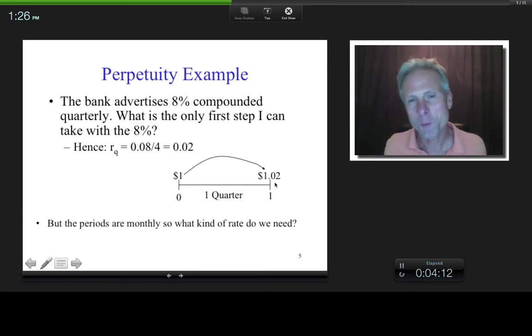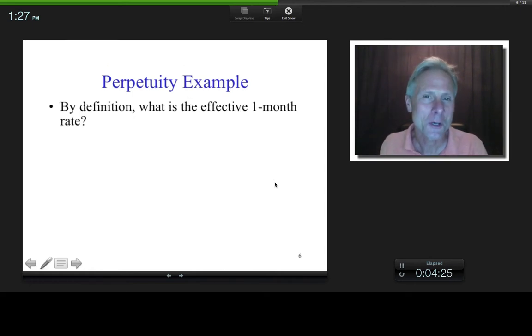But if you recall, the periods that we have with our perpetuity are monthly, right? So we better be working with an effective monthly rate. So by definition, remind me, what's the effective monthly rate?